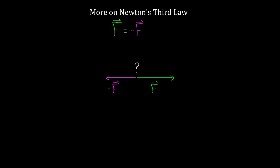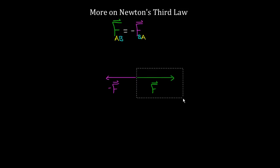And the answer is no, and the reason it's no is because these two forces are exerted on different objects. So you have to be careful. The reason this statement of Newton's third law is still a little bit too vague is because the forces are really on different objects. So if this is the force on object A exerted by object B, then this force over here has to be the force on object B exerted by object A. In other words, these forces are exerted on different objects.